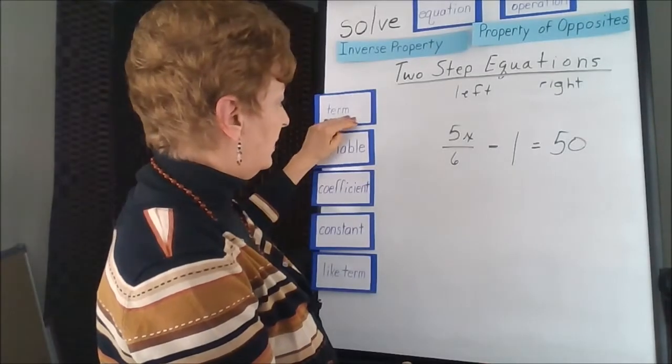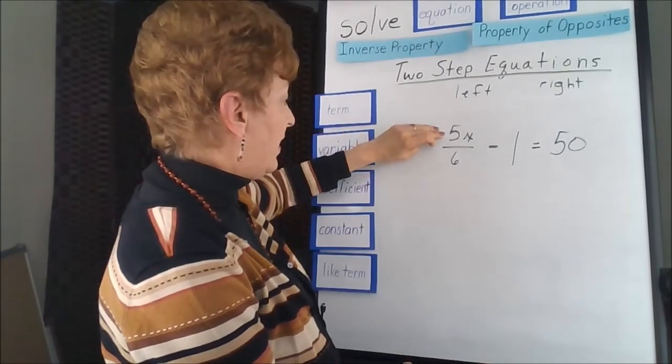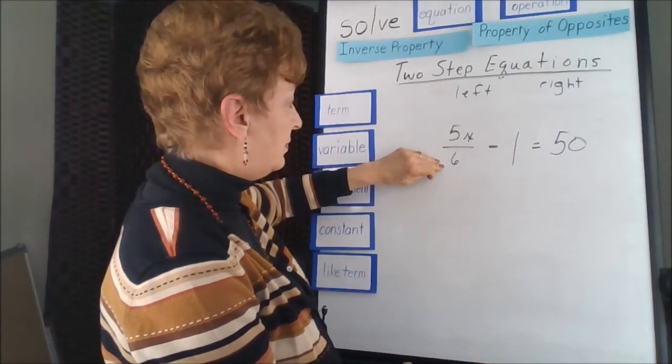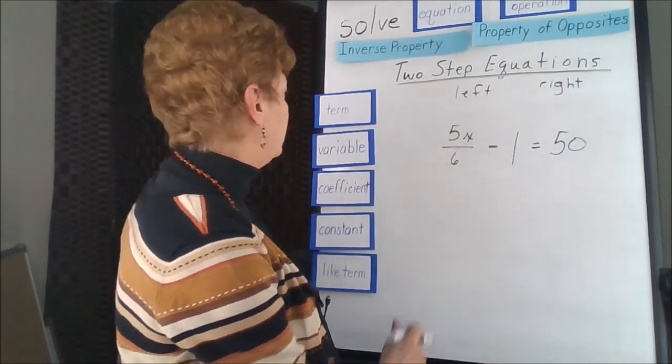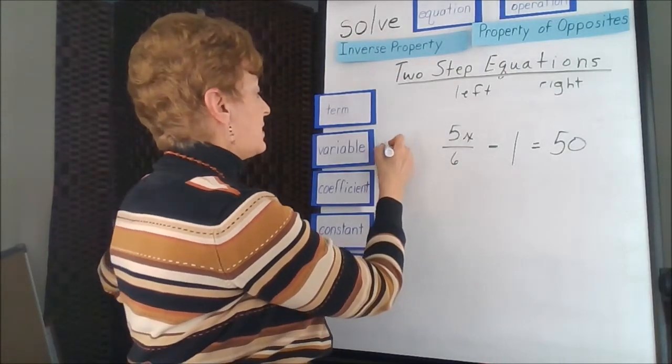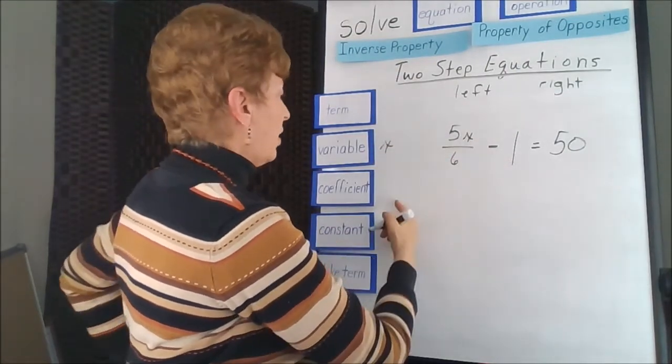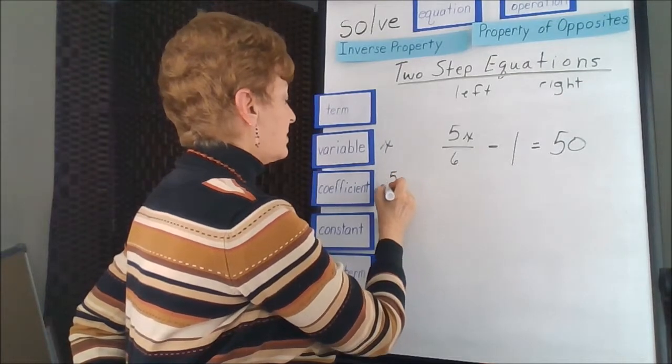Our terms: 5x divided by 6 is a term, negative 1 is a term, 50 is a term. The variable is x. The coefficient of that x is actually 5 sixths.